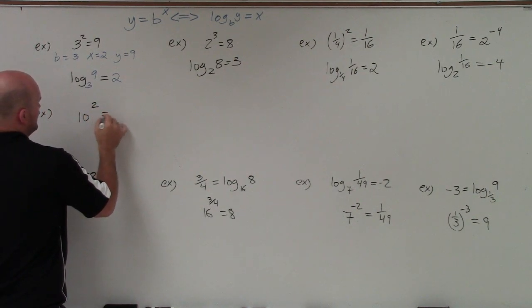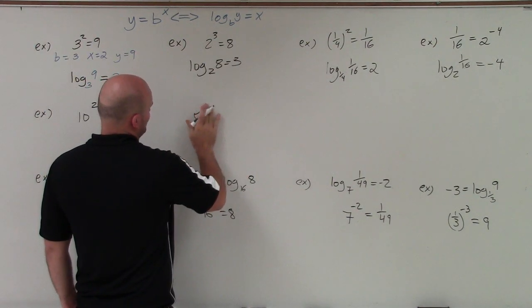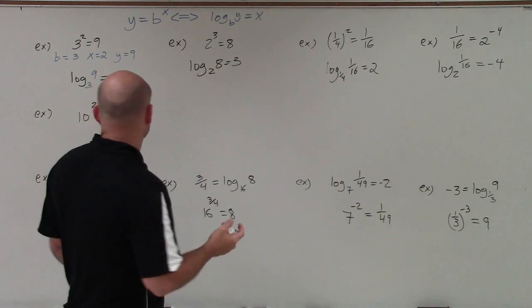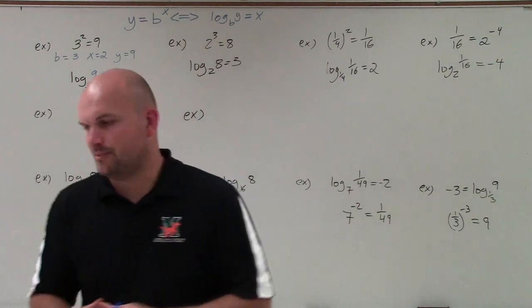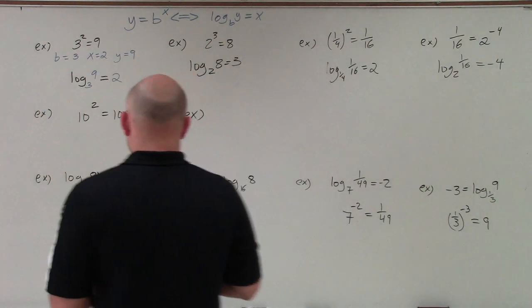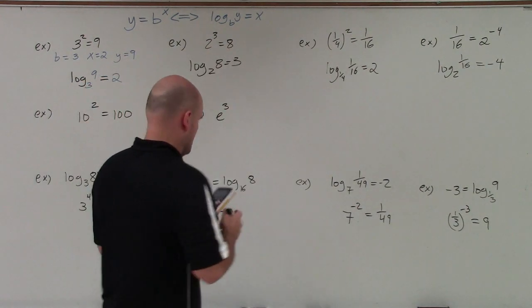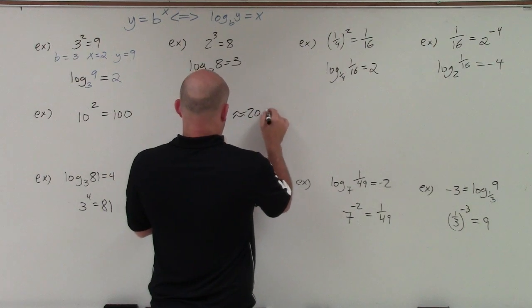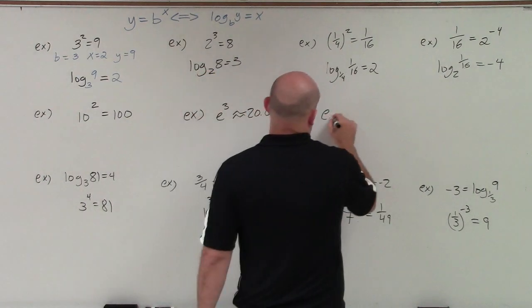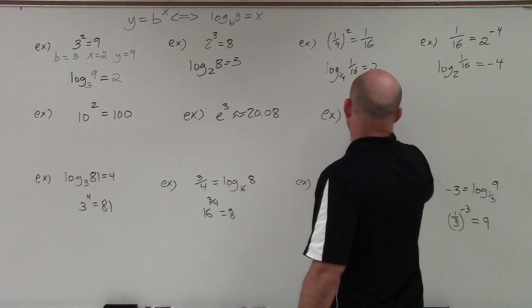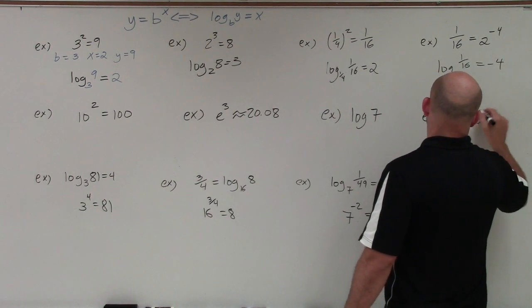10 to the 2nd power equals 100. That's why I didn't do e, because I didn't know my e. Let me make up a problem. e to the 3rd power is approximately 20.08. Let's do log of 7. And let's do ln of 5.